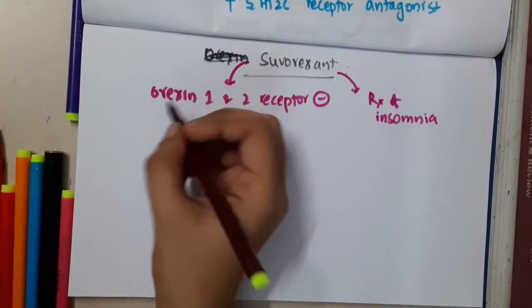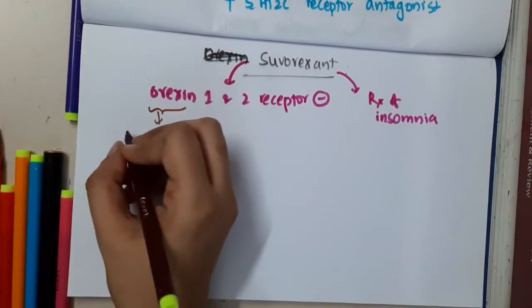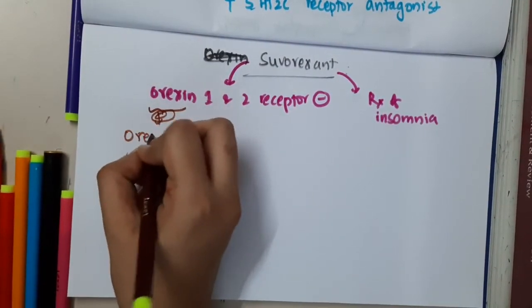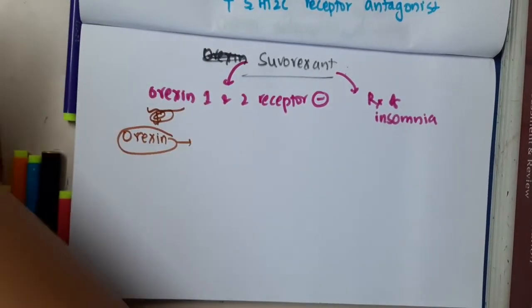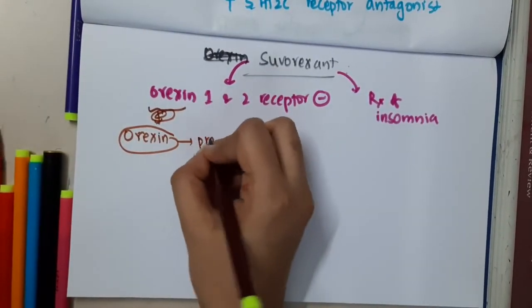So if you see these O-rexins, what are these O-rexins? O-rexins are actually produced in the lateral hypothalamus.